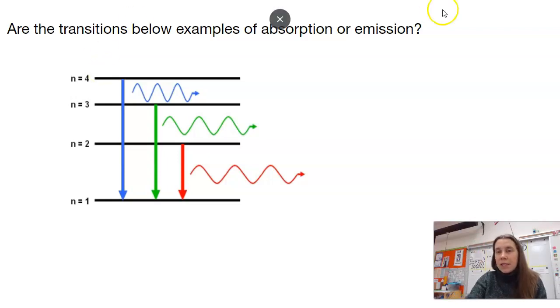Emission is the opposite. It is when the electron has been excited into a higher energy level and it drops back down to a lower potential energy. That energy, that extra energy, has to go somewhere.